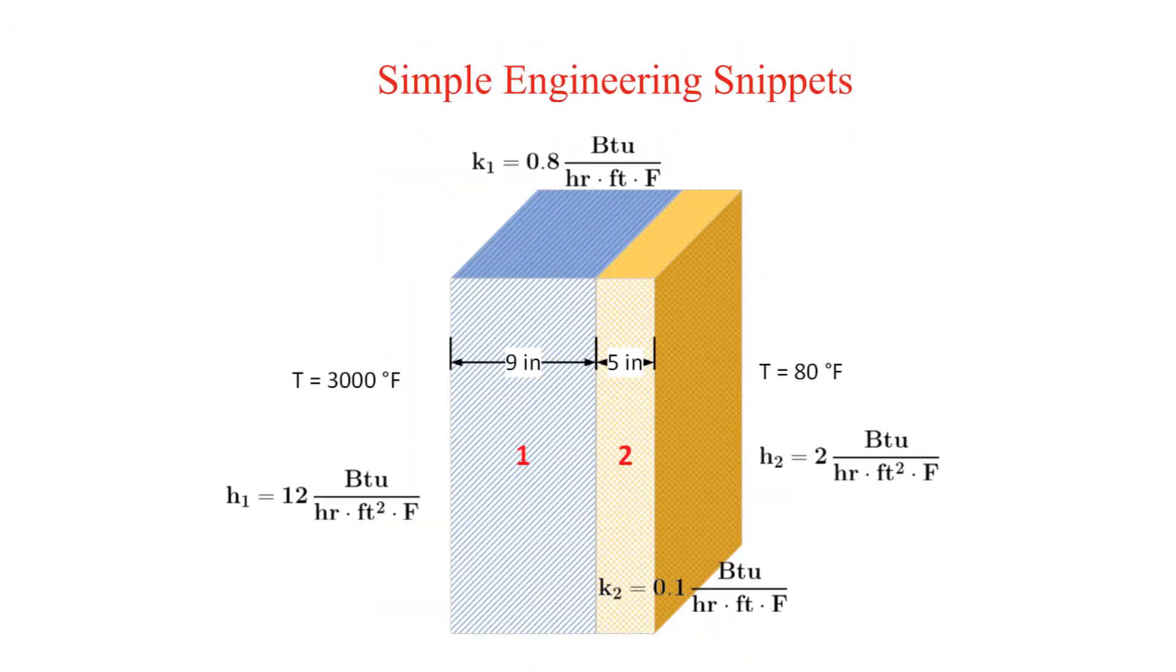Shown is a composite wall that consists of two slabs. The thickness and conductivity of each slab is provided. The left side is exposed to a temperature of 3,000 degrees Fahrenheit. The right hand side is exposed to 80 degrees Fahrenheit. The convection coefficient for each of these sides is provided.